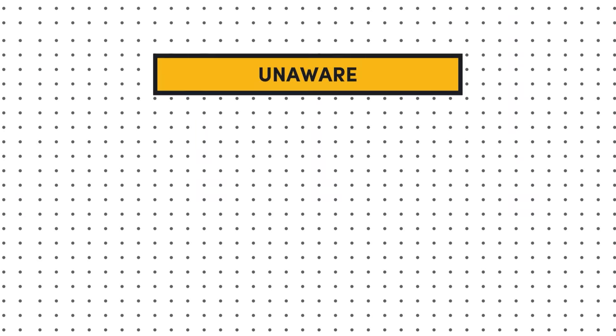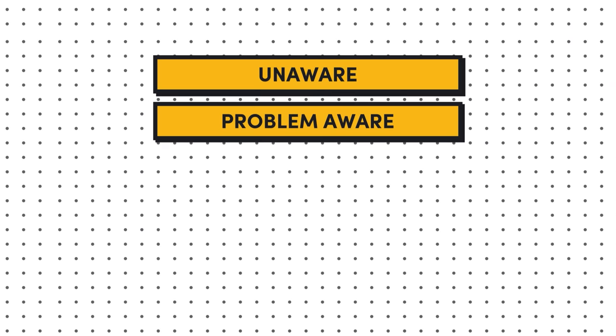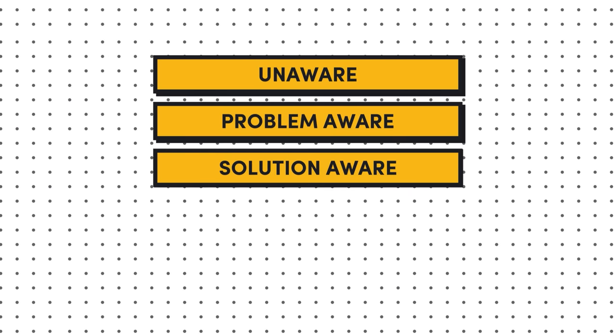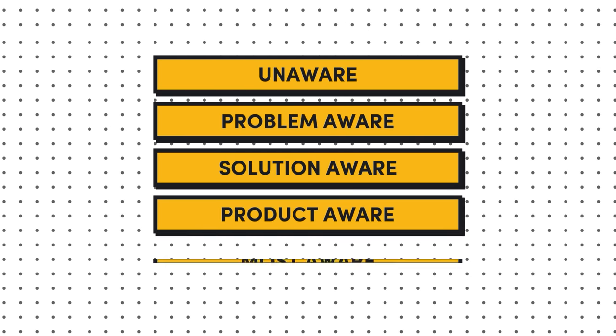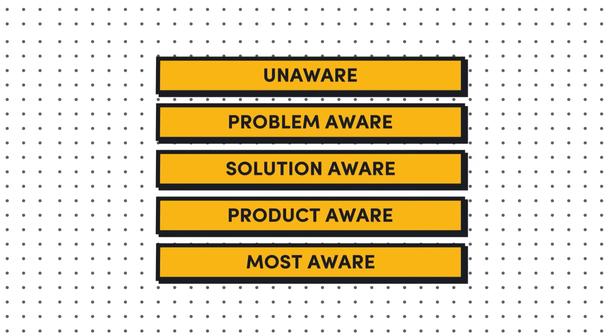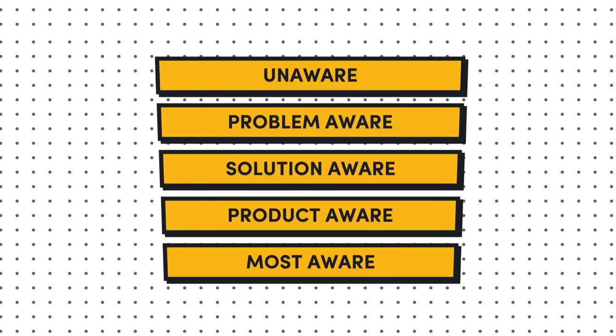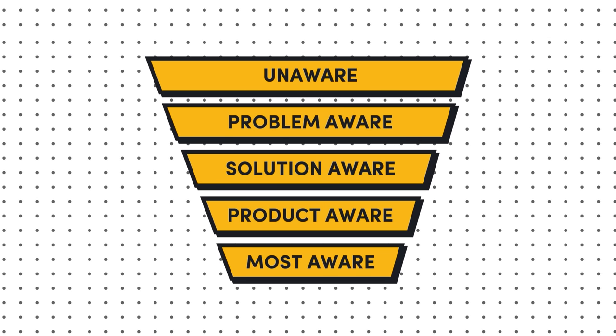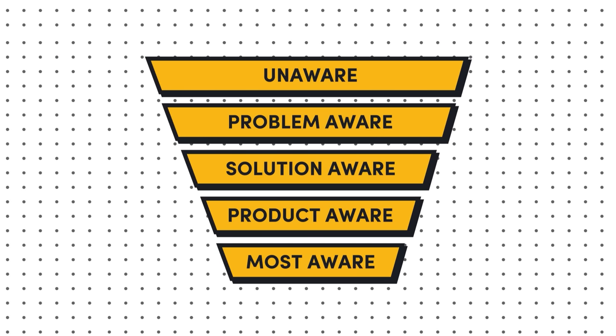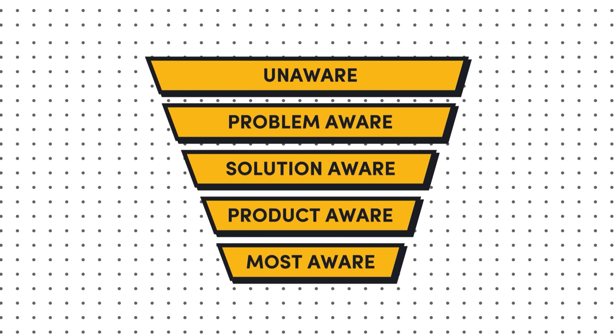We're going to dive into the levels as we get into the video, but briefly, the five levels are: unaware, problem aware, solution aware, product aware, and most aware. The key to this content strategy is overlaying your content ideas with these five levels of awareness, and then choosing the right level or levels in the funnel to focus on.